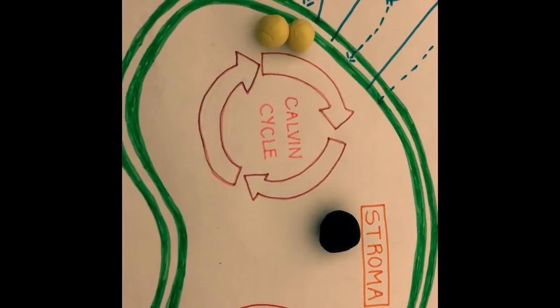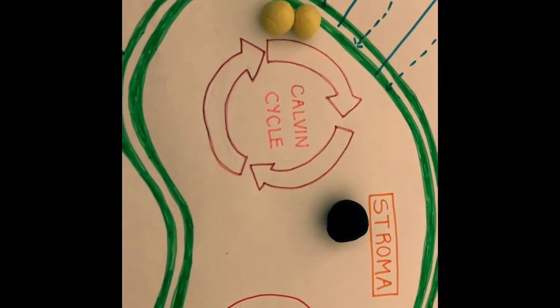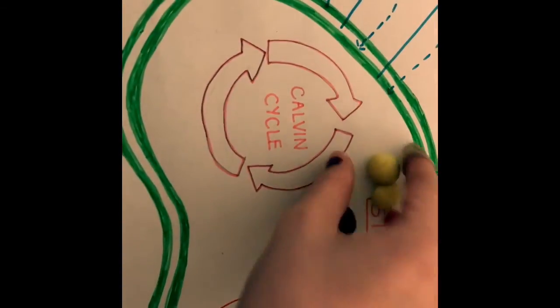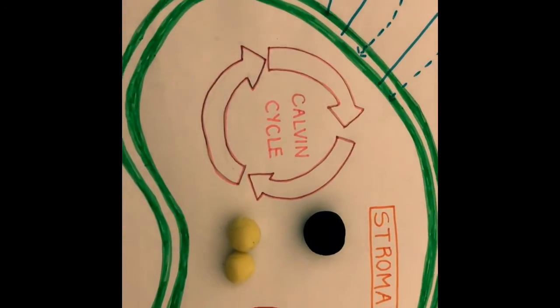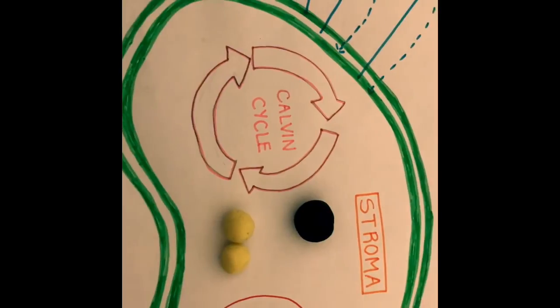The third stage of the Calvin cycle is called regeneration, and this is when the G3P molecules leave the Calvin cycle and are sent to the cytoplasm so they can contribute to the formation of other compounds that the plant needs.